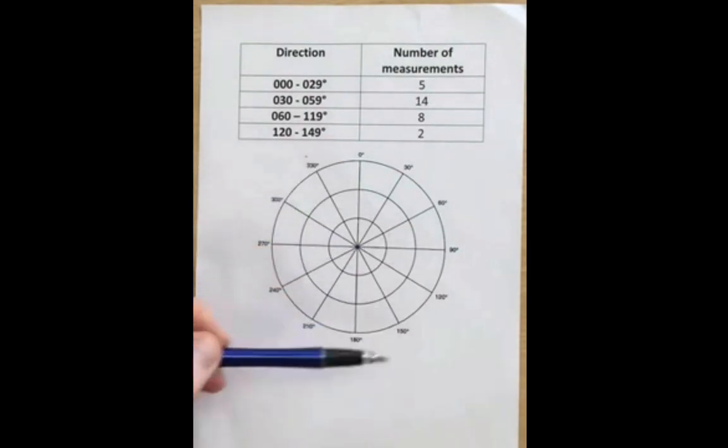A rose diagram is plotted on a piece of circular graph paper or polar graph paper is another name for it.